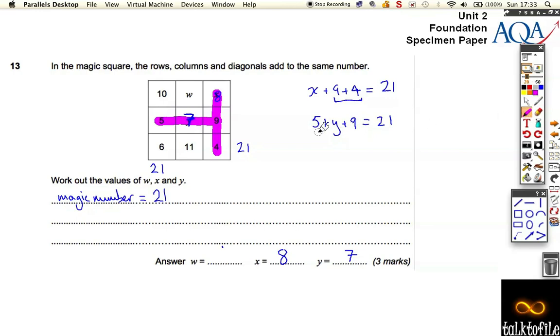Now, I could do this last one in all sorts of different ways. I could add up going down, I could add up going across. Let's go across here. So now I know that 10 plus w plus 8 has also got to be 21. Well, 10 plus 8 is 18, so I need 3 more to make my 21. Let's check in the other direction. 7 and 11 is 18, so w must be 3.